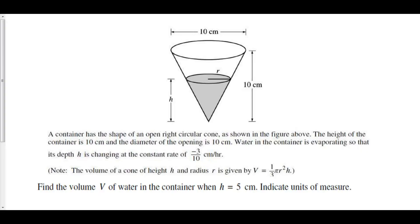Let's now take a look at a cone problem for related rates. A container has the shape of an open right circular cone as shown in the figure above. The height of the container is 10 cm and the diameter of the opening is also 10 cm. Water in the container is evaporating so that its depth h is changing at the constant rate of negative 3 over 10 cm per hour. Find the volume of water in the container when h is equal to 5 cm and indicate units of measure.